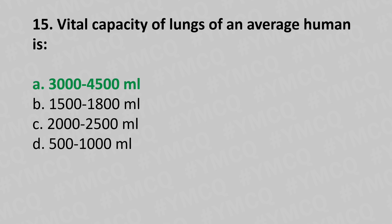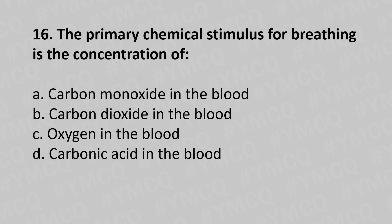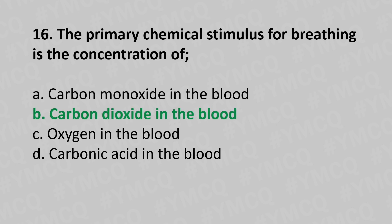Now let's move to question number sixteen. The primary chemical stimulus for breathing is the concentration of: option a, carbon monoxide in the blood; option b, carbon dioxide in the blood; option c, oxygen in the blood; option d, carbonic acid in the blood. And the answer is option b, carbon dioxide in the blood.